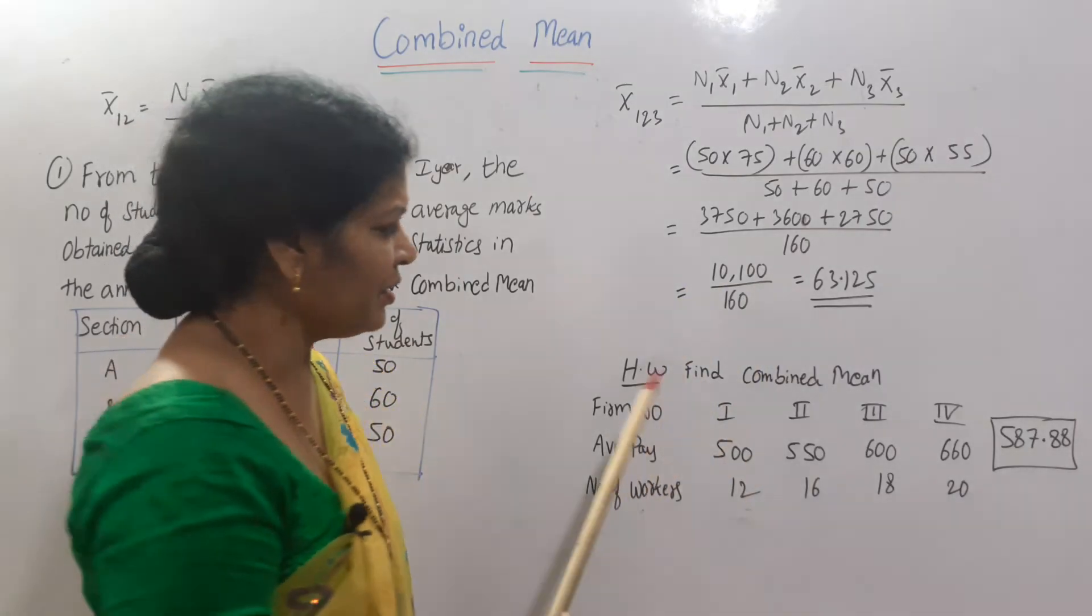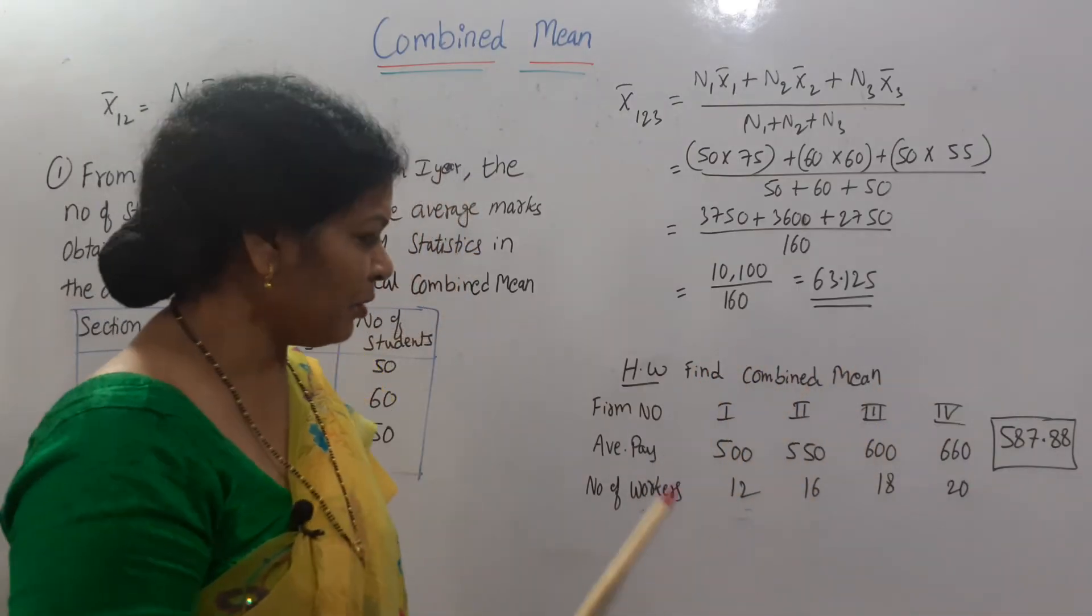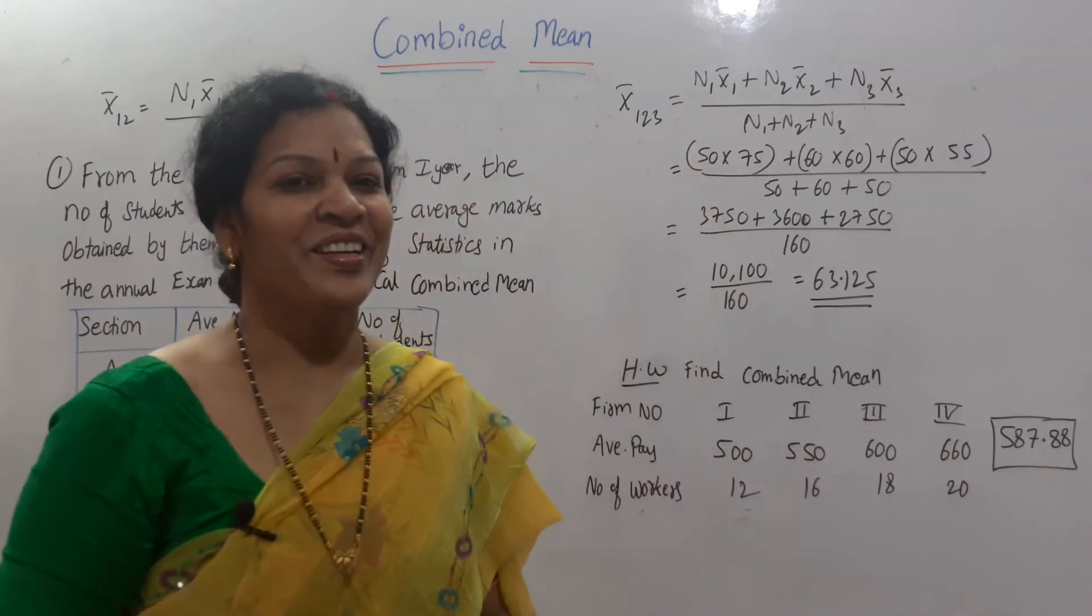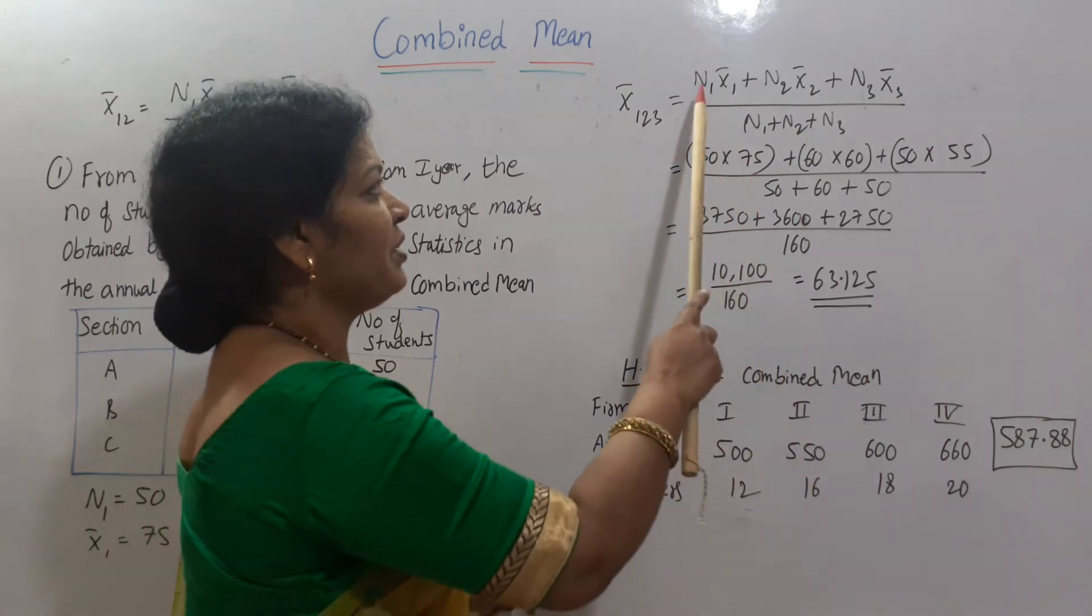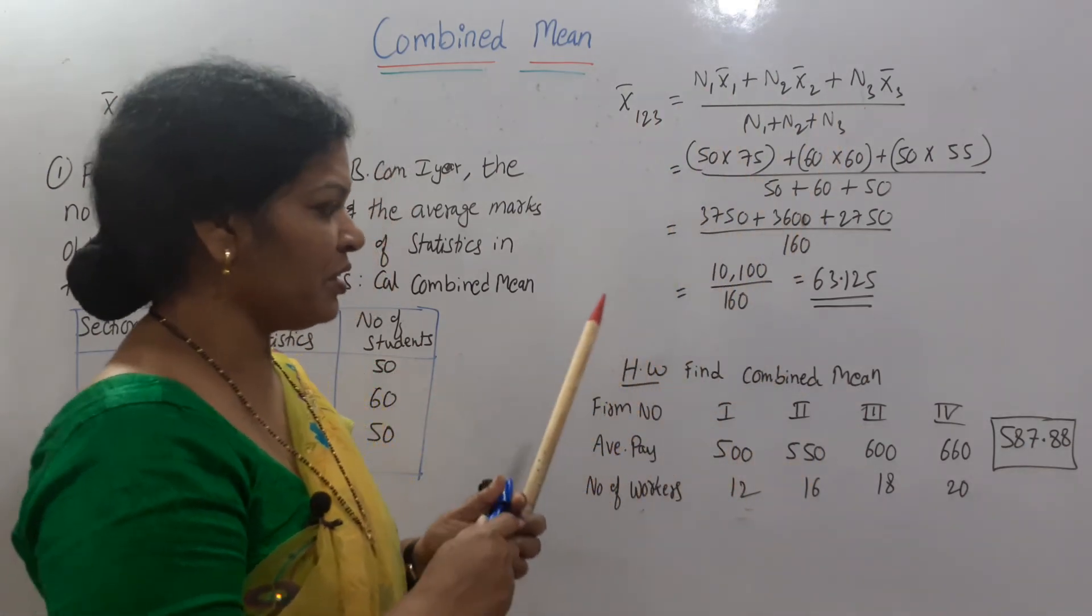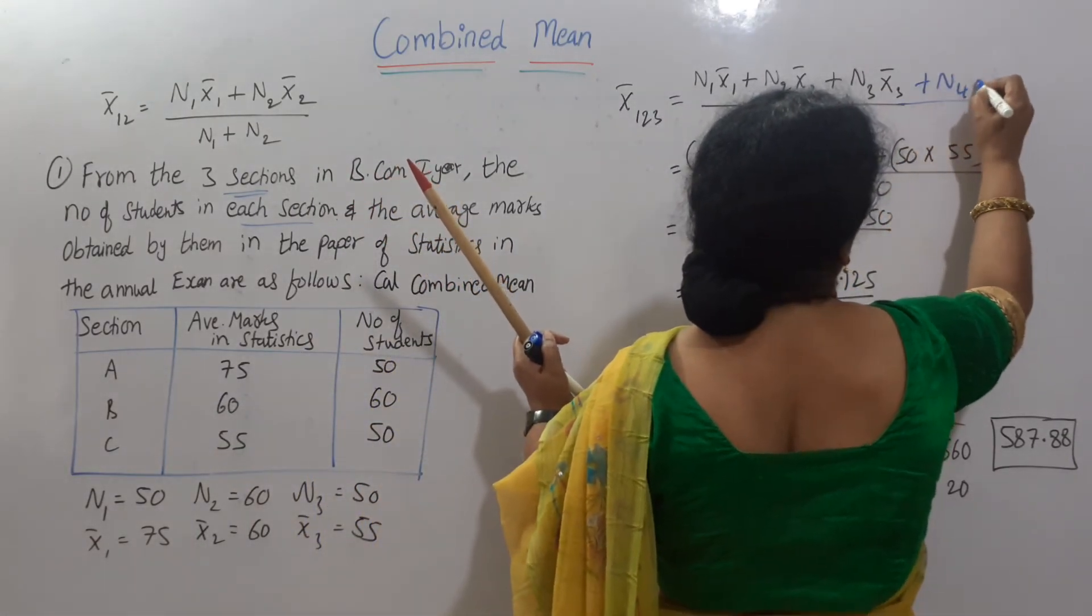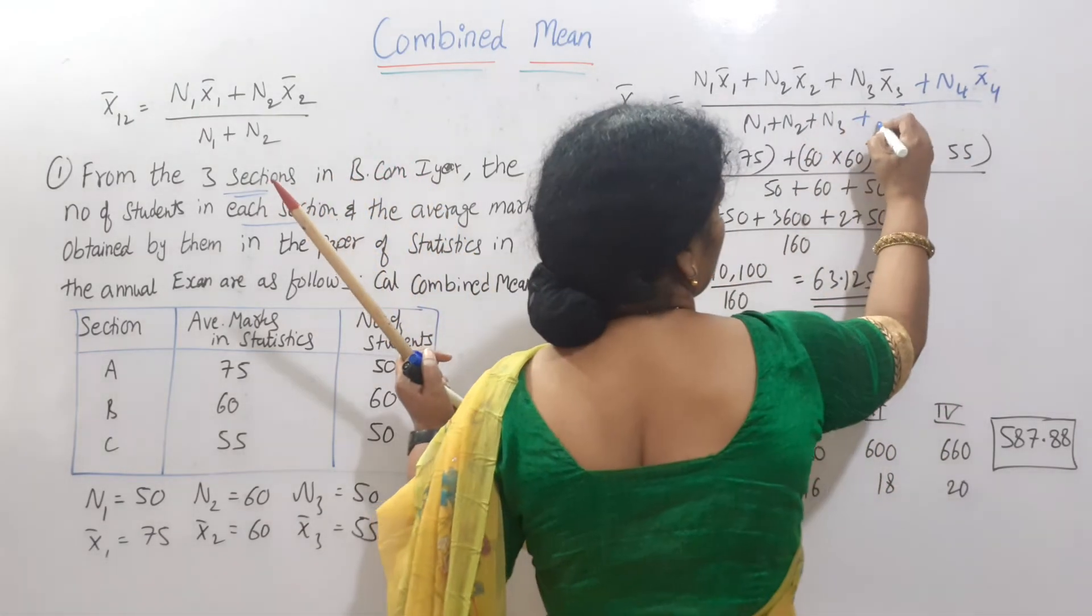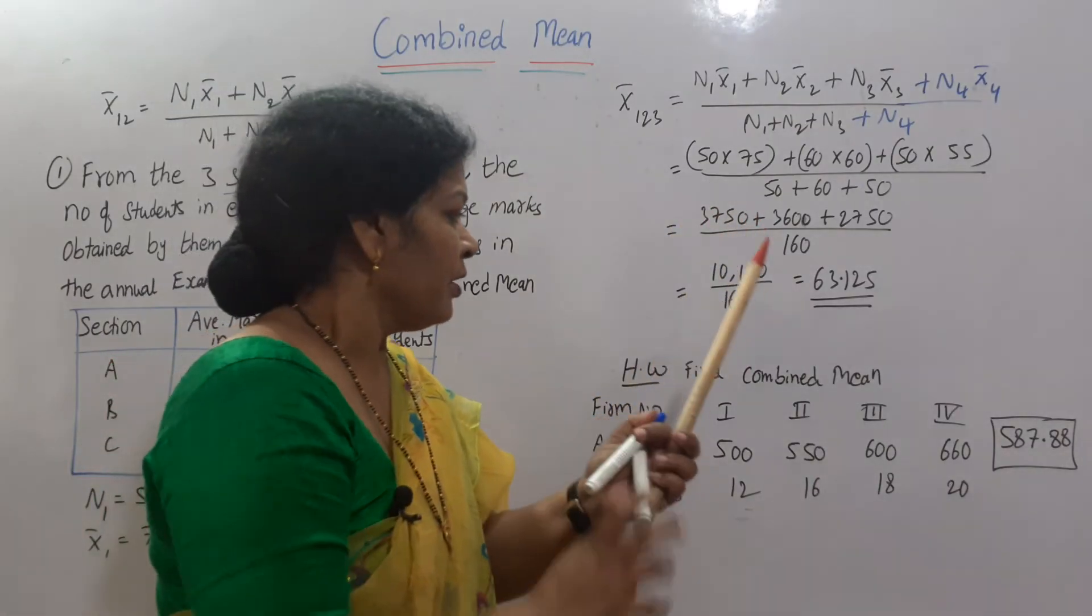If you are clear, here is a homework problem for you. Find combined mean. What is given to us? Form number 1, 2, 3, 4, means formula you are going to extend it. 4 is given. Earlier n4, X bar 4. Here plus n4. You will extend the formula.